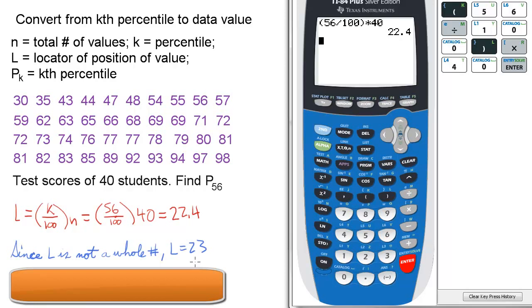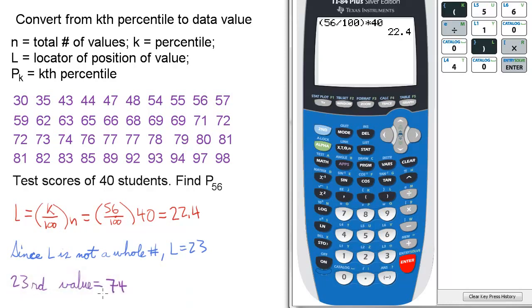What does that mean? We go to the 23rd data value. This is cool because each row has 10 values. So 10, 20, 21st value, 22nd, 23rd is 74. So the 23rd value is 74. That's your p sub 56.